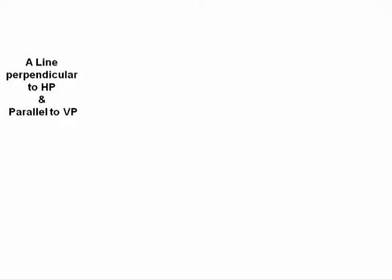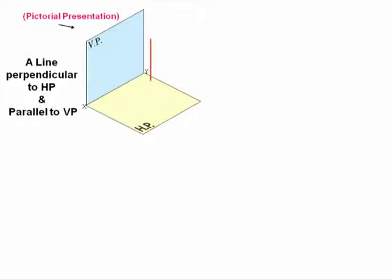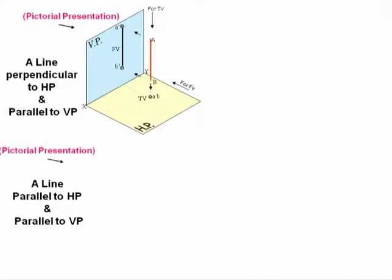When the line is perpendicular to HP and parallel to VP, the front view is a line of true length, and the top view will be a point because when you see from the top you can see only one point. When you rotate the horizontal plane, the front view will be above XY and the top view will be below XY.